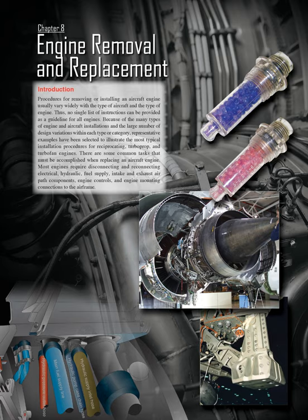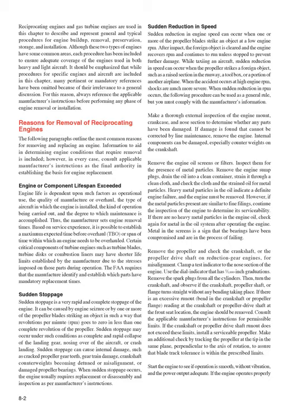There are some common tasks that must be accomplished when replacing an aircraft engine. Most engines require disconnecting and reconnecting electrical, hydraulic, fuel supply, intake and exhaust air path components, engine controls, and engine mounting connections to the airframe. Reciprocating engines and gas turbine engines are used in this chapter to describe general and typical procedures for engine buildup, removal, preservation, storage, and installation, covering both heavy and light aircraft.